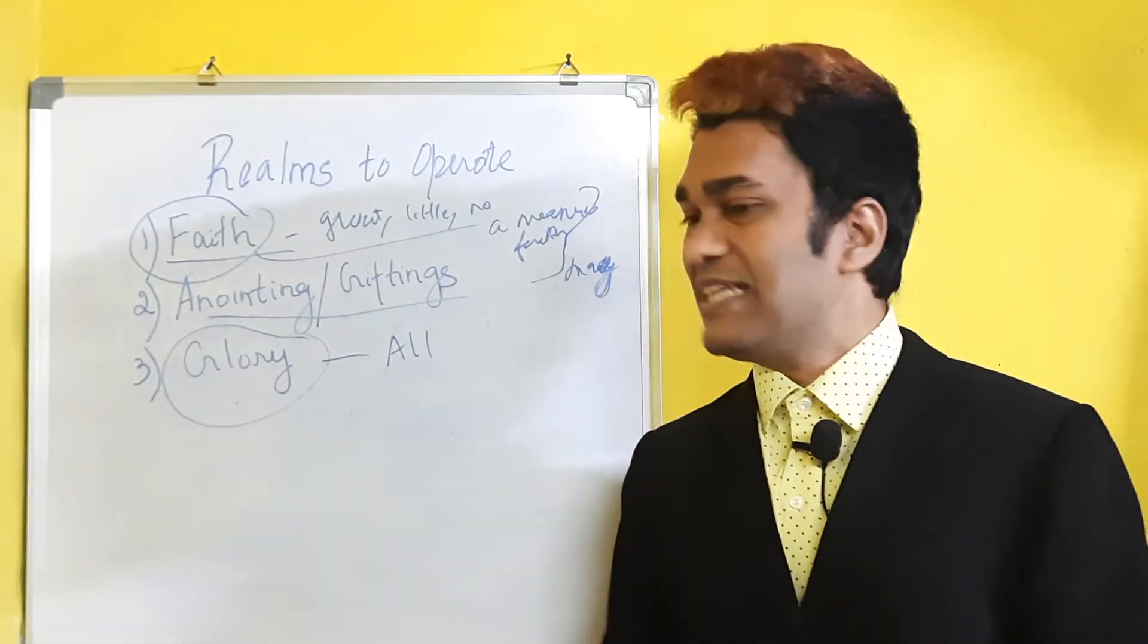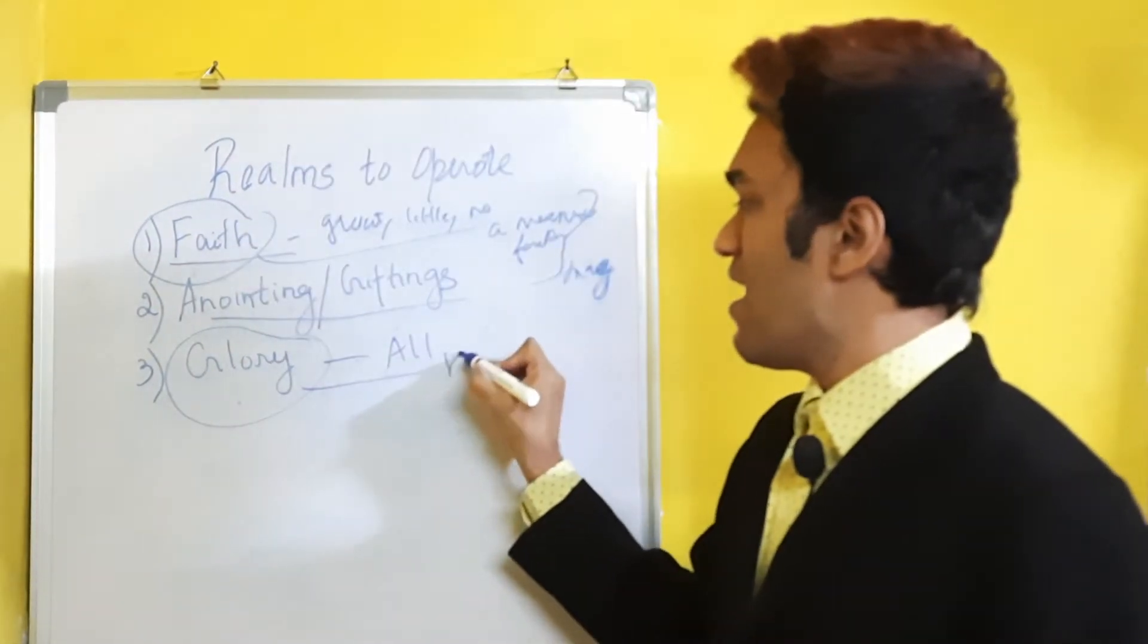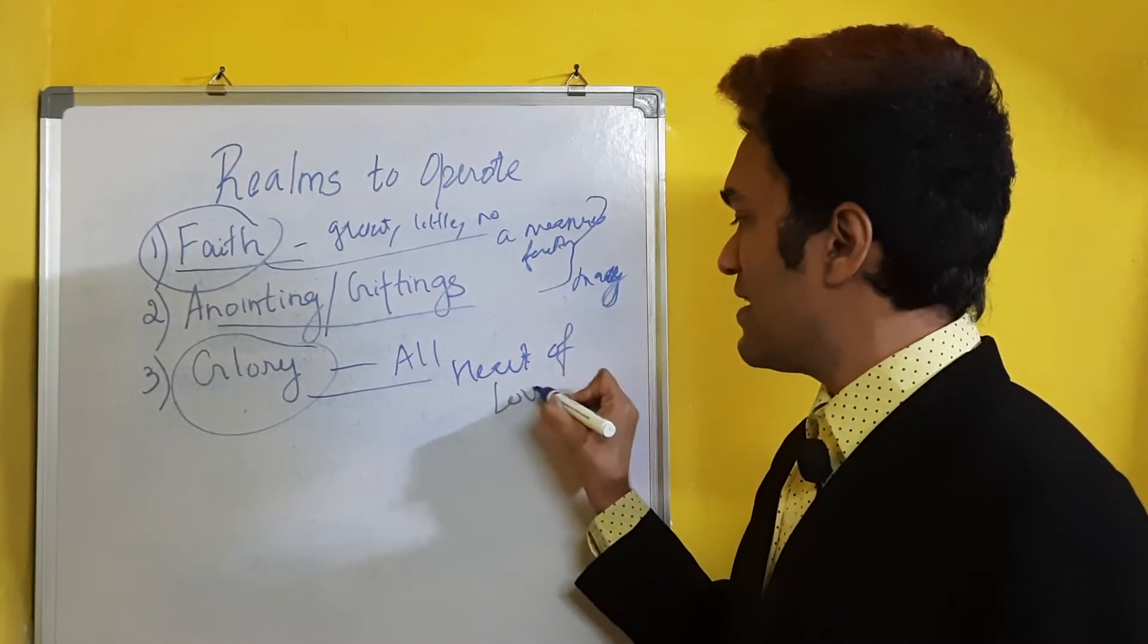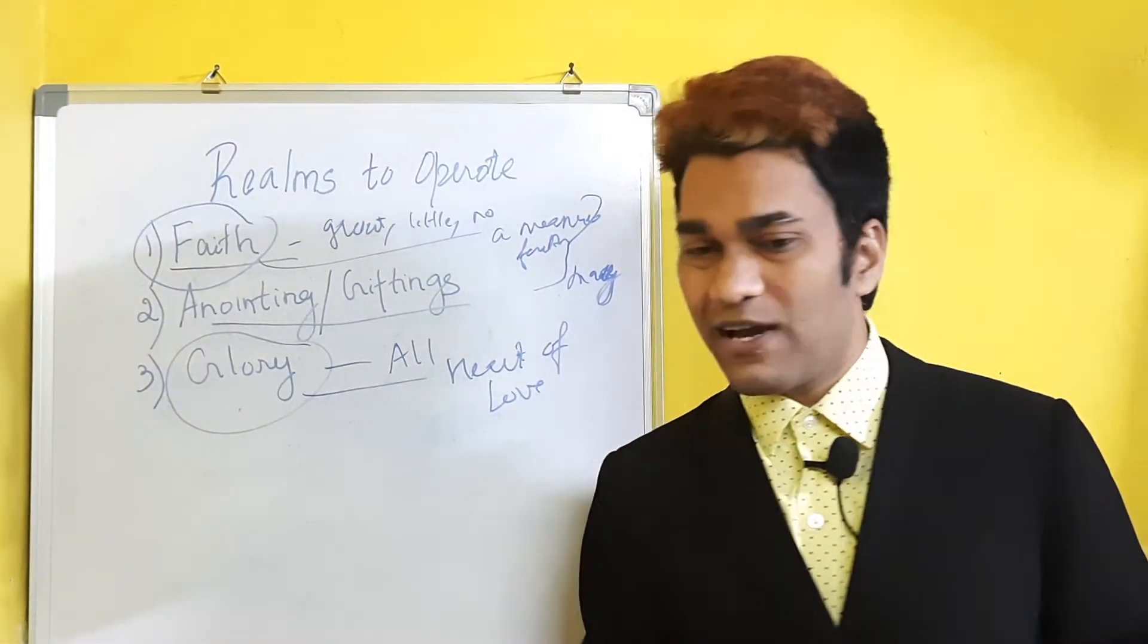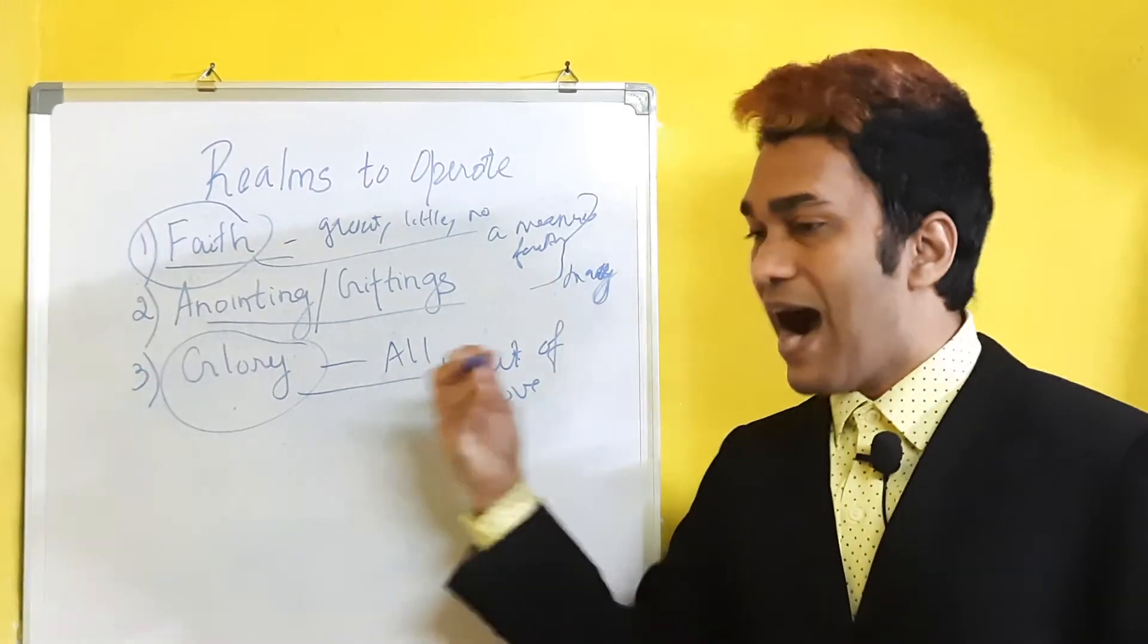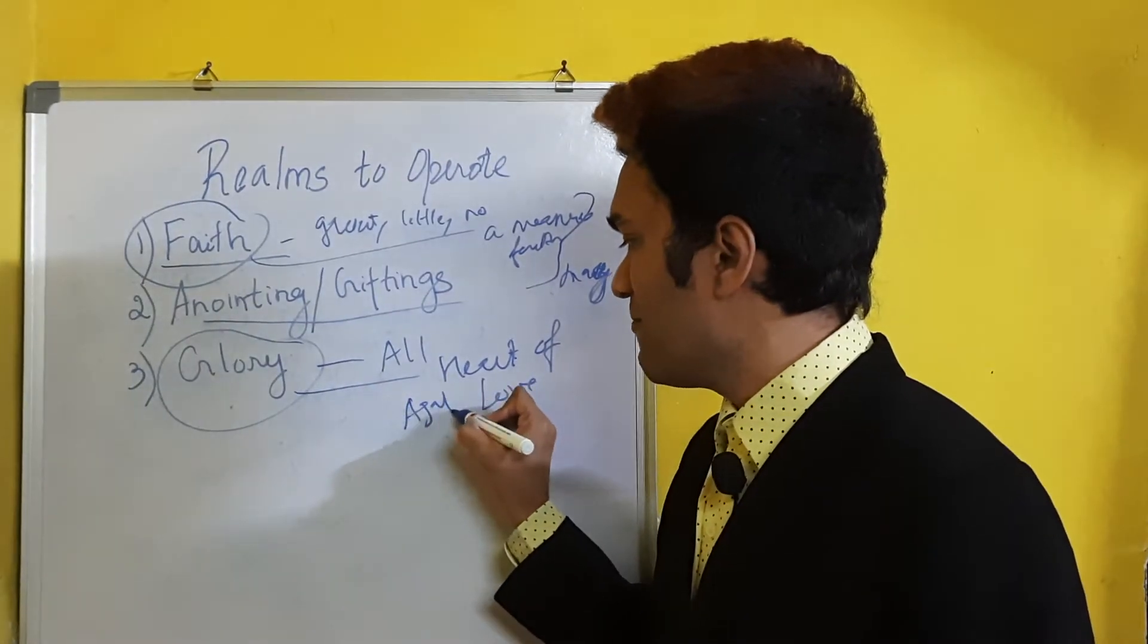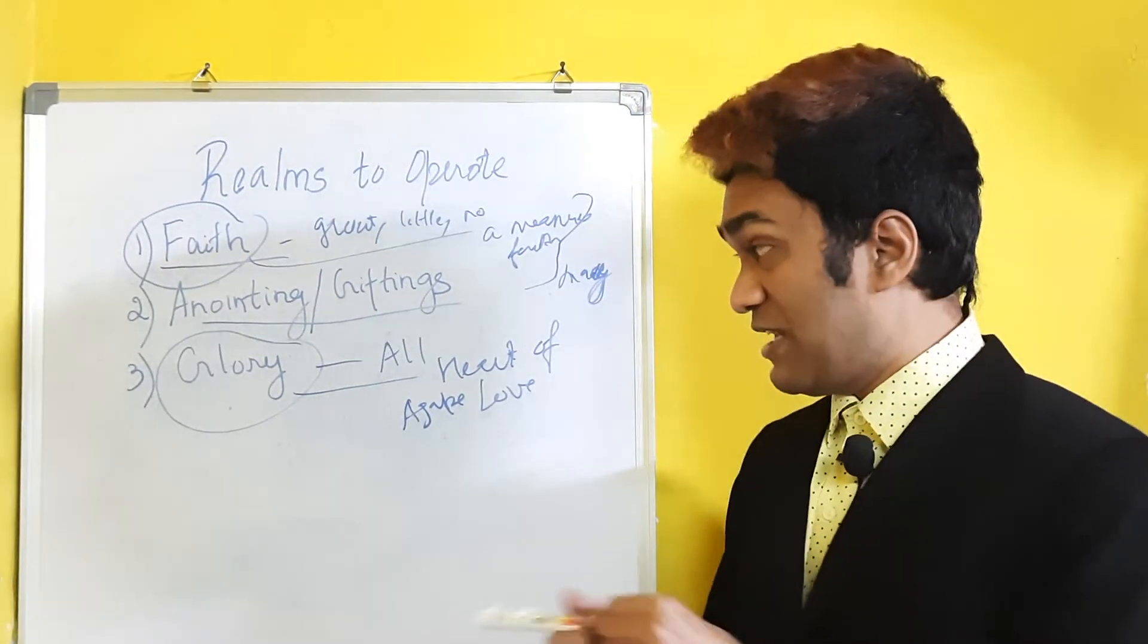God wants us to operate in this glory realm, but having a heart of love. There's one more very important thing - you need the heart of love. I'll say more precisely, agape love. When you have agape love and you're growing, immense things are possible.